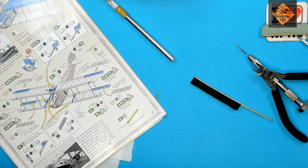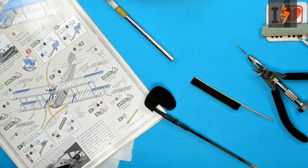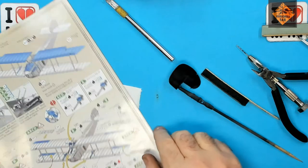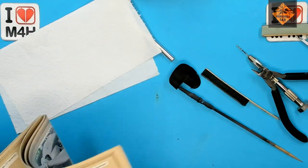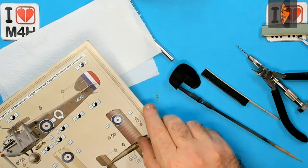Now I'm masking up the tail to get it ready for spraying. I'm going to airbrush the red, white, and blue stripes on here, rather than use a decal. I also have a cunning plan, but that's for later. Anyway, let's crack on.